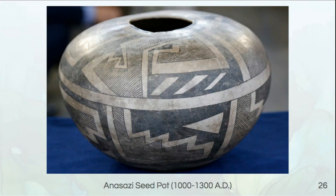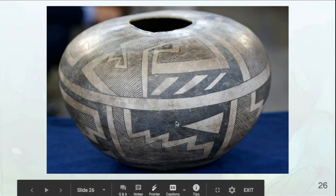Here we have the Anasazi Seed Pot. The design on this should look vaguely familiar — I feel like it really echoes some of the line design from the Zen line design project in your first week as a freshman. We have these beautiful thinner lines contrasting with fatter white lines, contrasting with thicker, more solid black space, and then these geometric forms. There isn't a whole lot of organic happening here unless you count the shape of the pot itself — everything else is very, very geometric, and it's really absolutely beautiful.